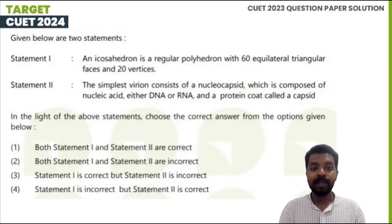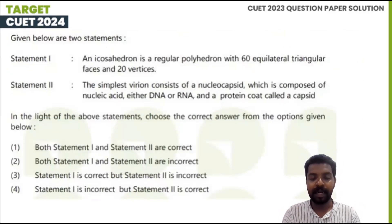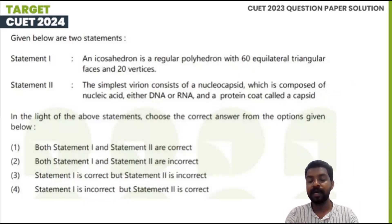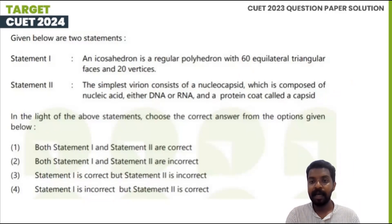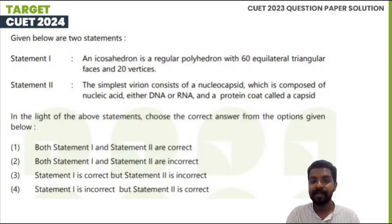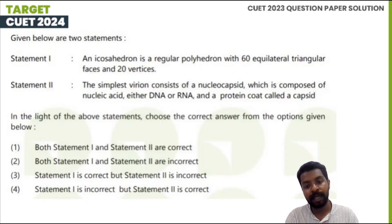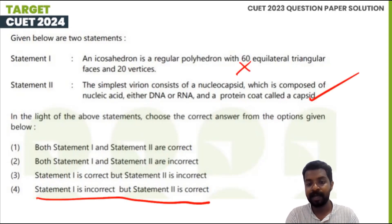The question is: given below are two statements. An icosahedron is a regular polyhedron with 60 equilateral triangular faces and 20 vertices. The simplest virion consists of a nucleocapsid composed of nucleic acid — either DNA or RNA — and a protein called capsid. Statement 1 is incorrect and statement 2 is correct. Option 4 is the correct answer.